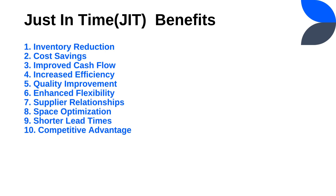In this diagram, you can see how the Just in Time inventory process works. The customer orders products, the company orders materials, the supplier delivers the materials, and the company delivers the product to the customer — just in time, without extra materials or excess products. The benefits of JIT include inventory reduction, cost saving, improved cash flow, increased efficiency, quality improvement, competitive advantage, shorter lead times, and improved supplier relationships through supply chain management.